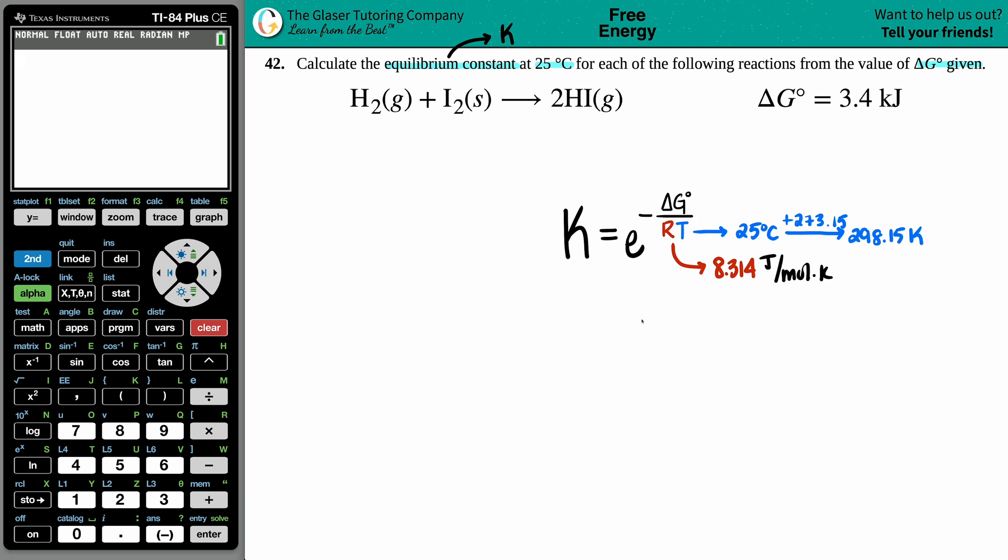Since the R value is in joules, my Gibbs free energy has to also be in joules. They gave me kilojoules, but I can quickly convert from kilojoules to joules by multiplying by 1000. This will be 3400 joules.